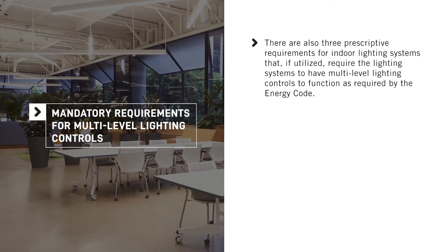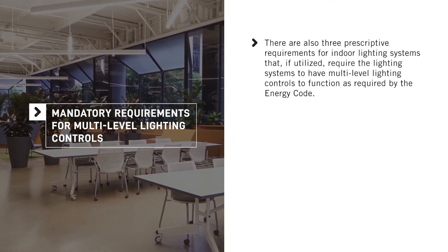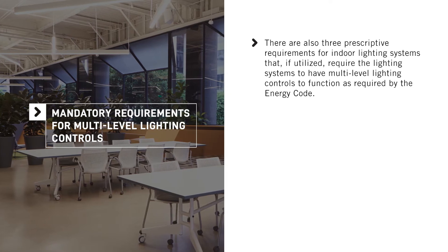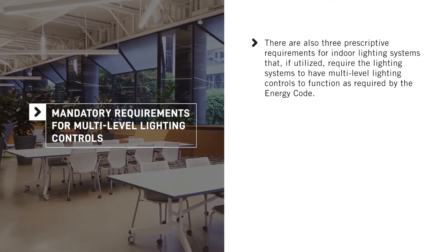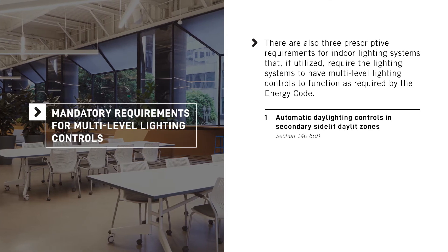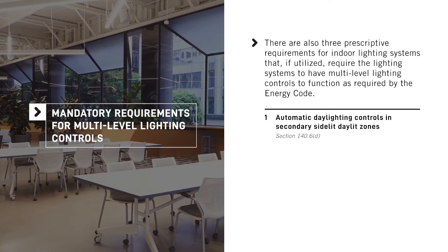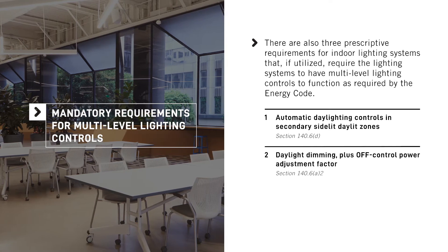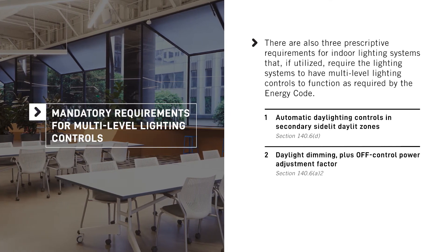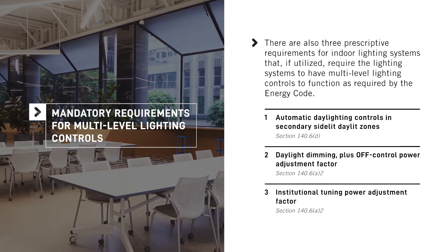There are also three prescriptive requirements for indoor lighting systems that, if utilized, require the lighting systems to have multi-level lighting controls to function as required by the Energy Code: automatic daylighting controls in secondary side-lit day-lit zones, the daylight dimming plus off-control power adjustment factor, and the institutional tuning power adjustment factor.